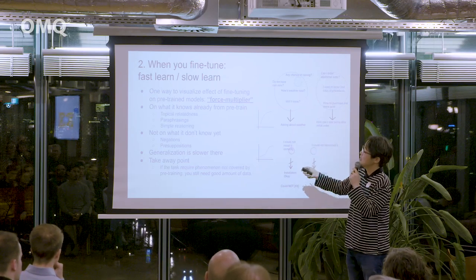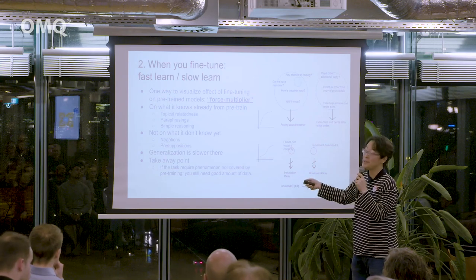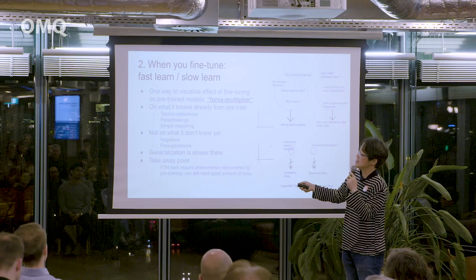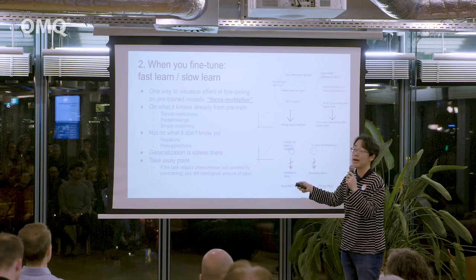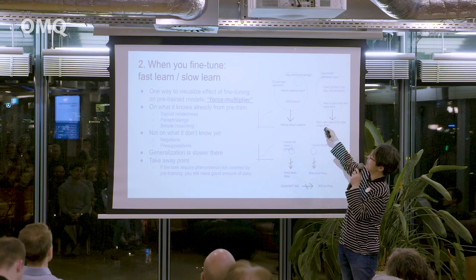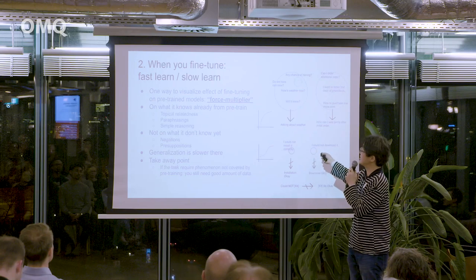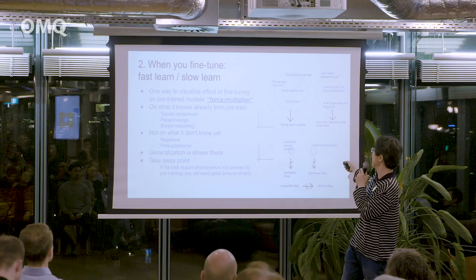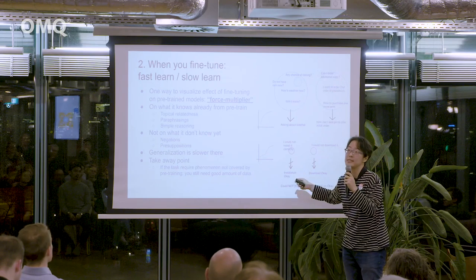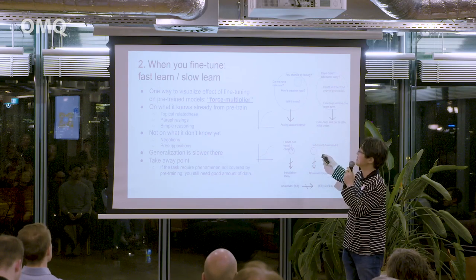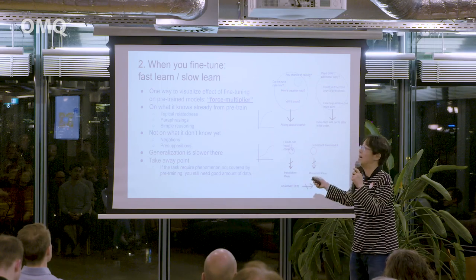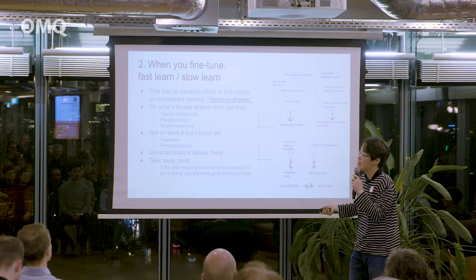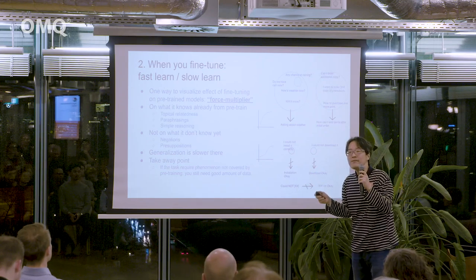If you try to generalize on things the model already knows, you can give just one example and it generalizes as if you had given additional diverse examples. For instance, giving just 'I want to order a second copy of my photo book' as an example for 'how can I add prints after initial order' — and it already generalizes, as if more varied examples were fed into the data.